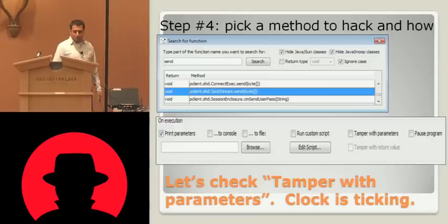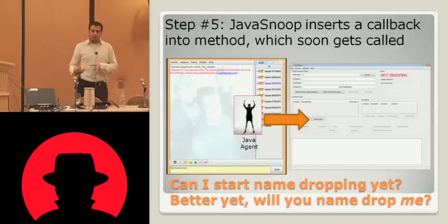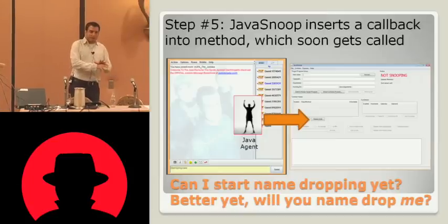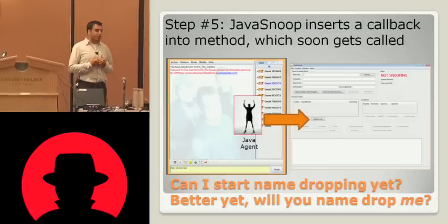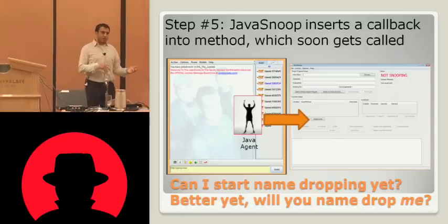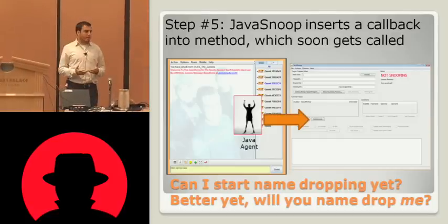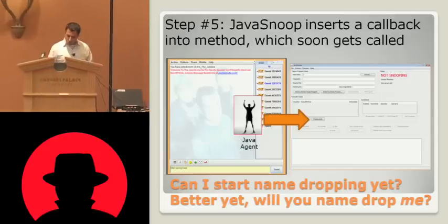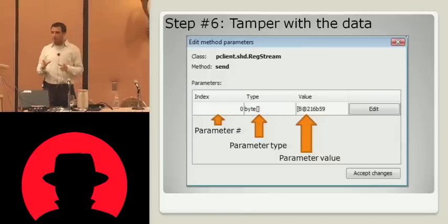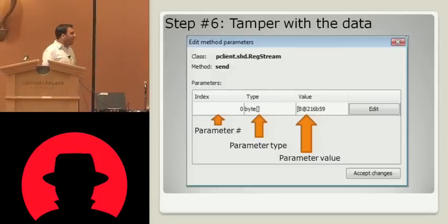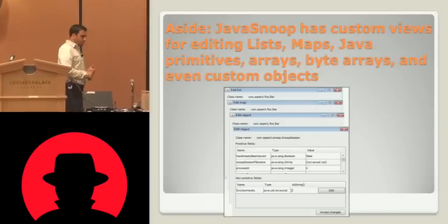We're going to tamper with the parameters to this send function — it looks like it takes a byte array. Once we choose that function, the Java Snoop GUI tells the agent inside the process: 'I want to intercept this method, and when that method is hit, send me the parameters and give me the opportunity to tamper with it.' This is just like Fiddler or Burp or WebScarab — whenever you have intercept turned on and that function gets called, you get a little pop-up box asking how you want to mess with the data. It gives you the class that's calling, the method that's calling, and an opportunity to edit.